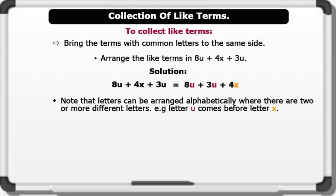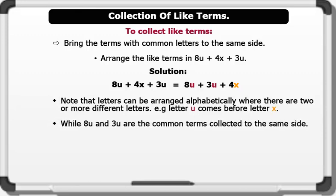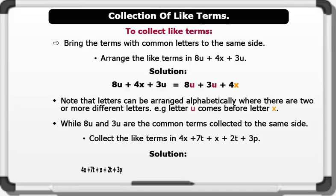Example: Letter U comes before letter X, while 8U and 3U are the common terms collected to the same side. Let's see another example. Collect the like terms in 4X plus 7T plus X plus 2T plus 3P. Solution: 4X plus 7T plus X plus 2T plus 3P equals 3P plus 7T plus 2T plus 4X plus X. That's very good.